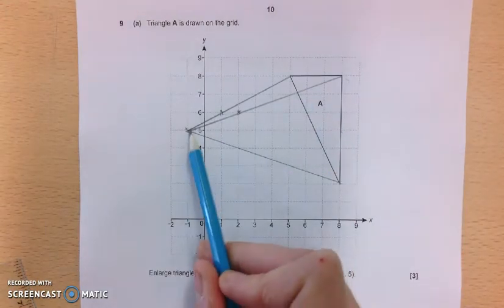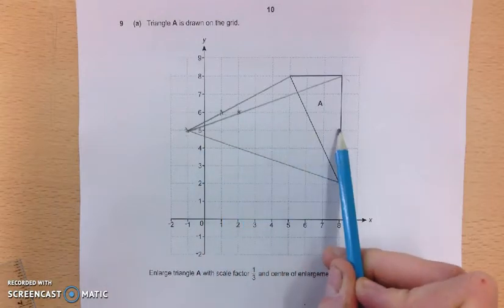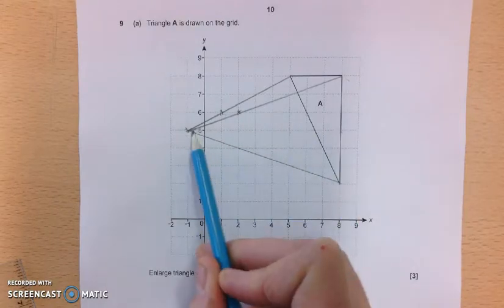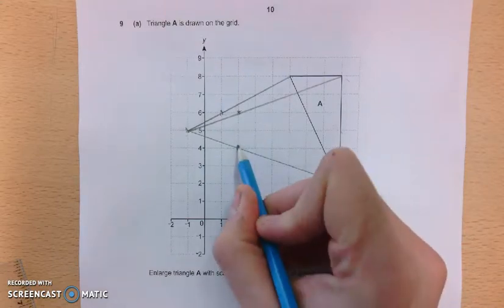And then we do the same for this one. So 1, 2, 3, 4, 5, 6, 7, 8, 9. And then 3 down. So I'm going to go 3 along and 1 down. And again, I'm on the ray line.